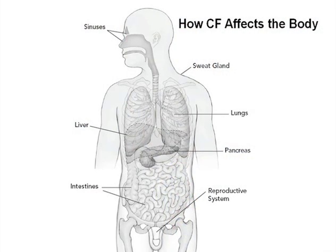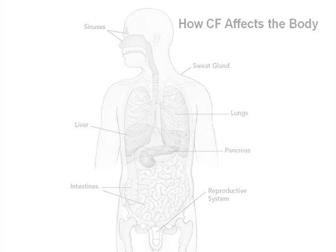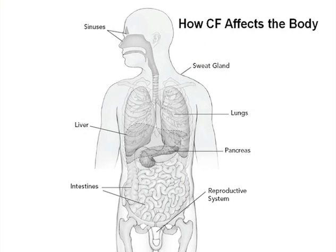The GI tract, comprised of pancreas, intestines, and liver, are also affected in CF. About 80% of patients with cystic fibrosis will have pancreatic insufficiency because the small ducts in the pancreas are blocked and destroyed, and pancreatic enzymes are not produced to digest food. Severe liver disease can occur in a small percentage of patients as well. Finally, there can be male infertility, caused by absence of the vas deferens, which is similar to having a vasectomy.